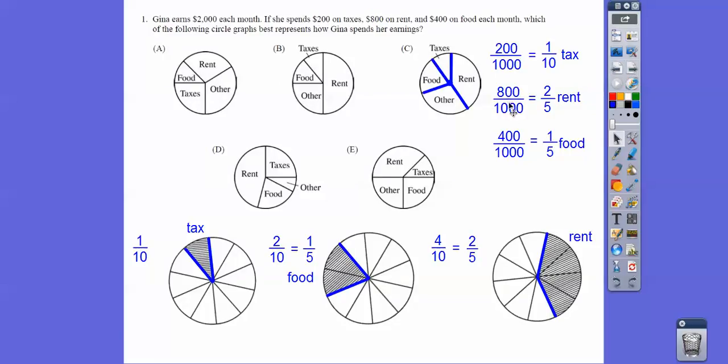So I did that right here. $800 divided by $1,000 is two-fifths. Well, two-fifths is the same as two-tenths.